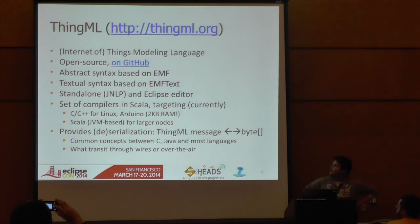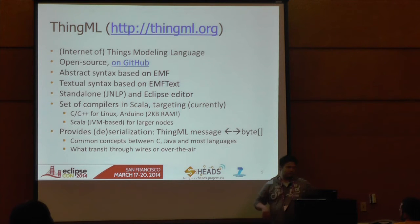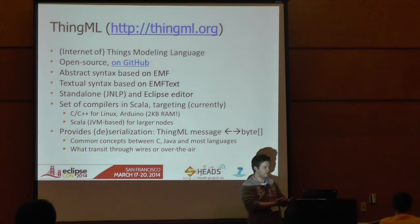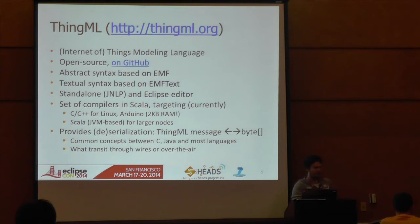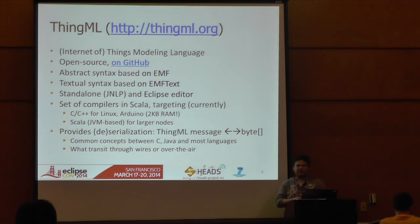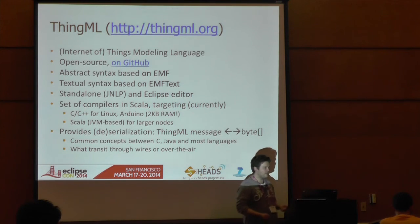To try to address some of these problems, we developed the ThingML language — ThingML stands for Internet of Things Modeling Language. It's fully open source and accessible on GitHub. It's based on a set of Eclipse technologies; in particular we use EMF and EMFText to define and implement the language. It comes with a textual editor integrated into Eclipse, and is also available as a standalone tool downloadable via Java Web Start. This modeling language is not just about creating models — we want to make it operational, meaning we want to generate executable code from it.